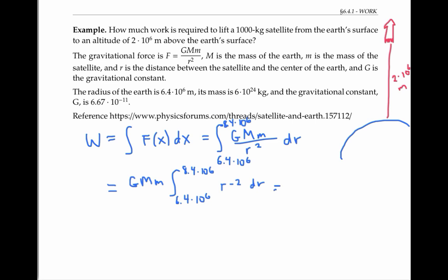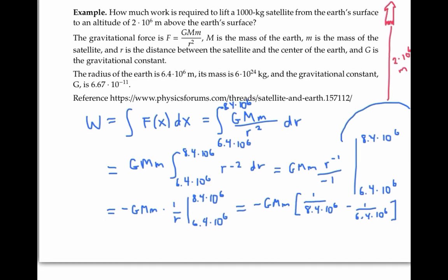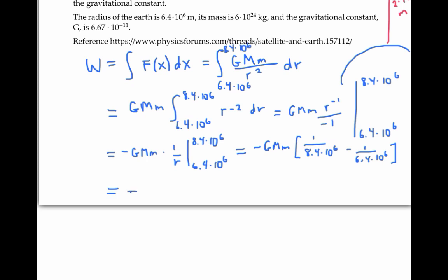Now I can integrate. And r to the minus two becomes r to the minus one over minus one. I'll rewrite one more time and substitute in for r to get a preliminary answer of negative G capital M lowercase m times negative 3.72024 times 10 to the minus eighth.